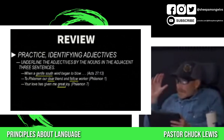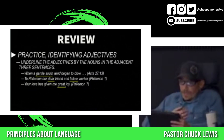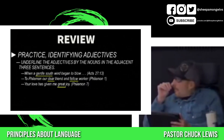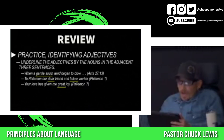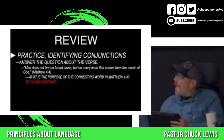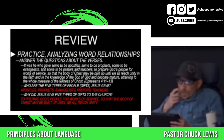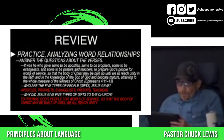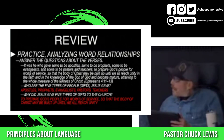On the second part, you were to underline the adjectives by the nouns in the adjacent three sentences. In the first one it was 'gentle south.' In the second one it was 'dear and fellow.' In the last one it was 'great.' Third, you were to answer the question about the verse — what is the purpose of the connecting word in Matthew 4:4? Its purpose is to show contrast. The five types of people or gifts Jesus gave are apostles, prophets, evangelists, pastors, and teachers.